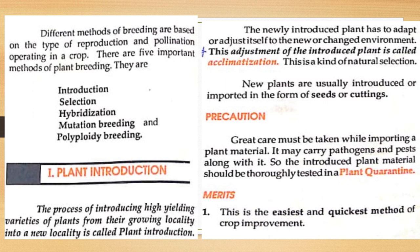Plant introduction is the process of introducing high-yielding varieties of plants from their growing locality into a new locality. The newly introduced plant has to adopt or adjust itself to the new or changed environment — this adjustment is called acclimatization, which is a kind of natural selection. New plants are usually imported in the form of seeds or cuttings. Precaution: great care must be taken while importing plant material, as it may carry pathogens and pests.